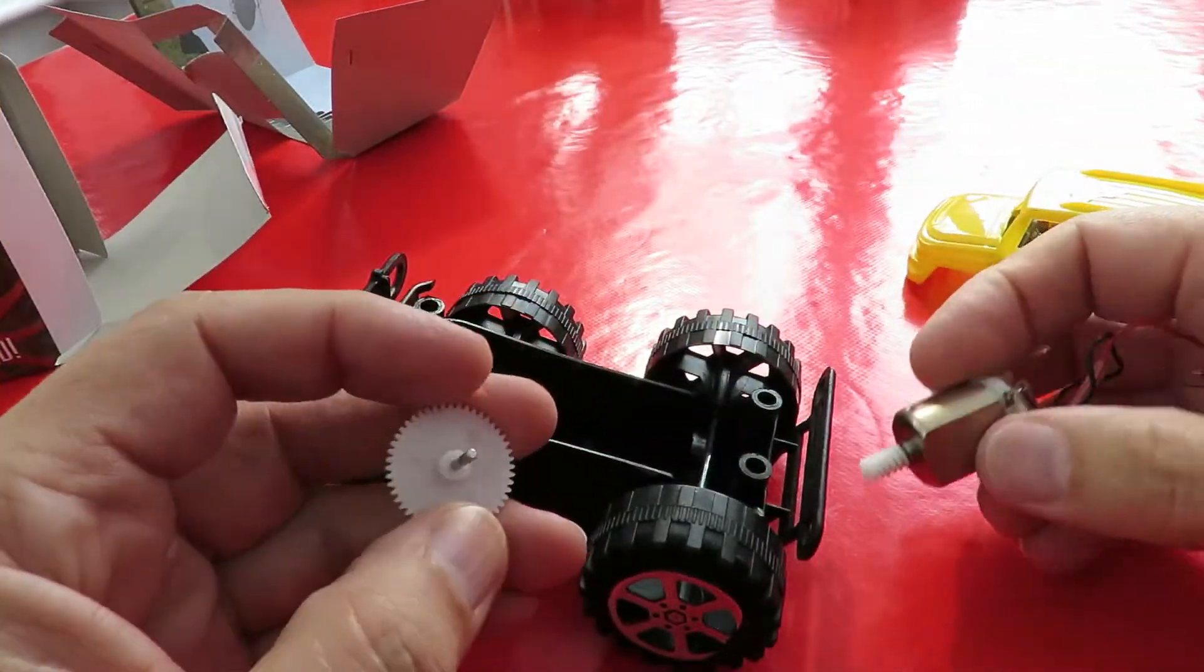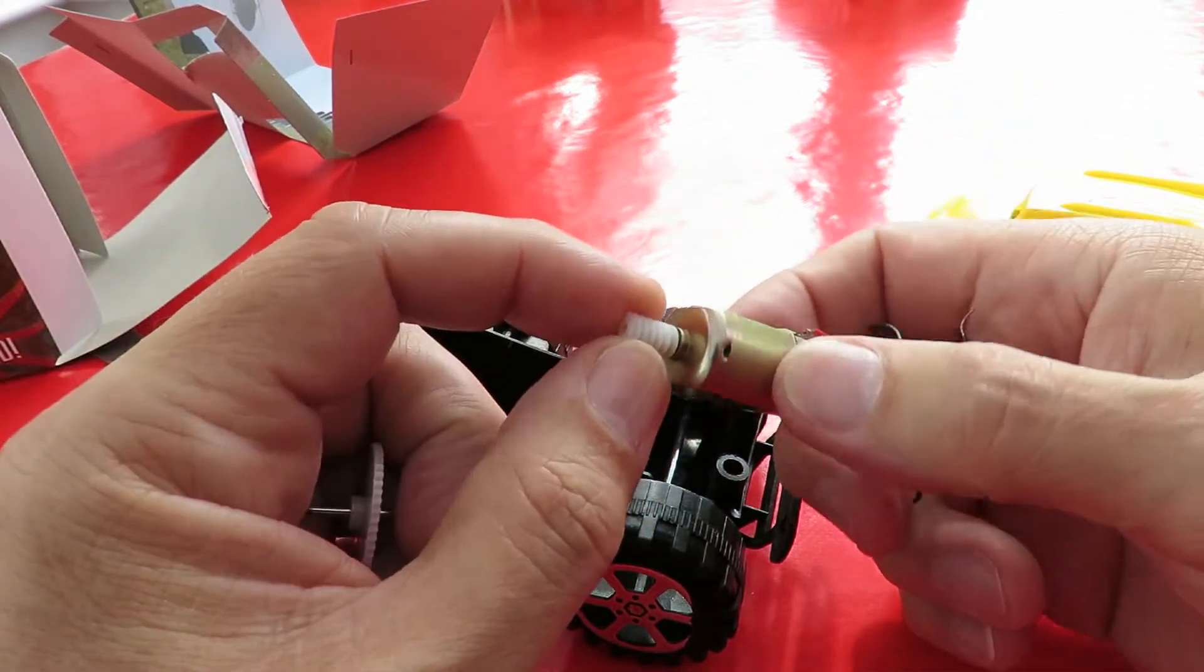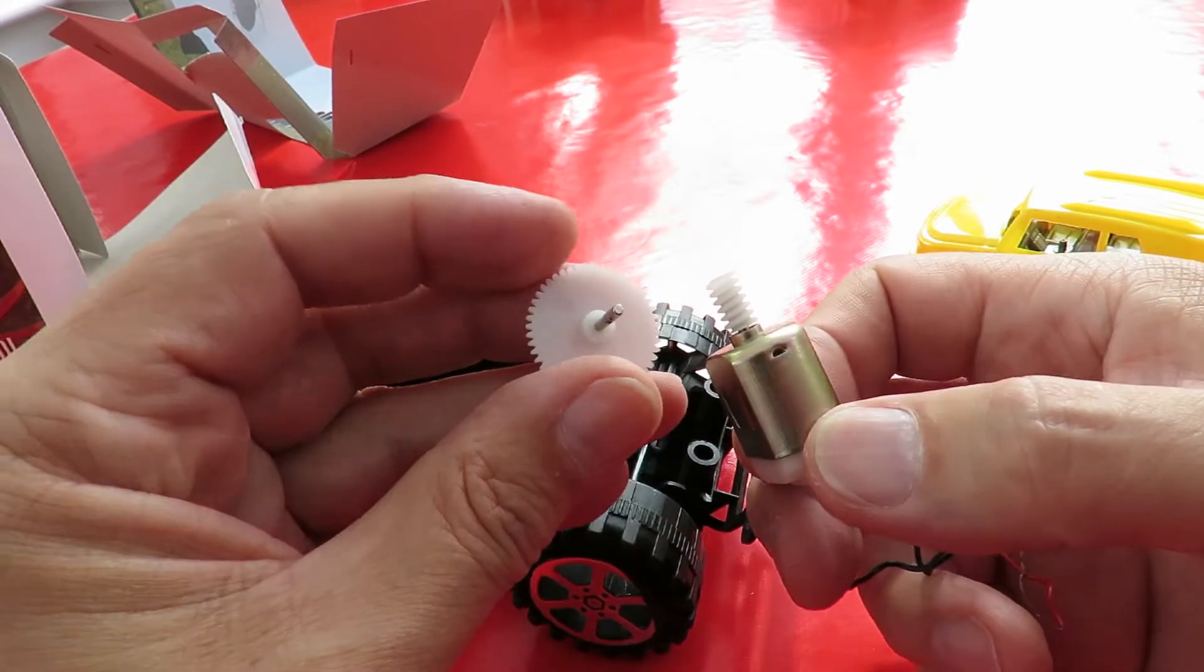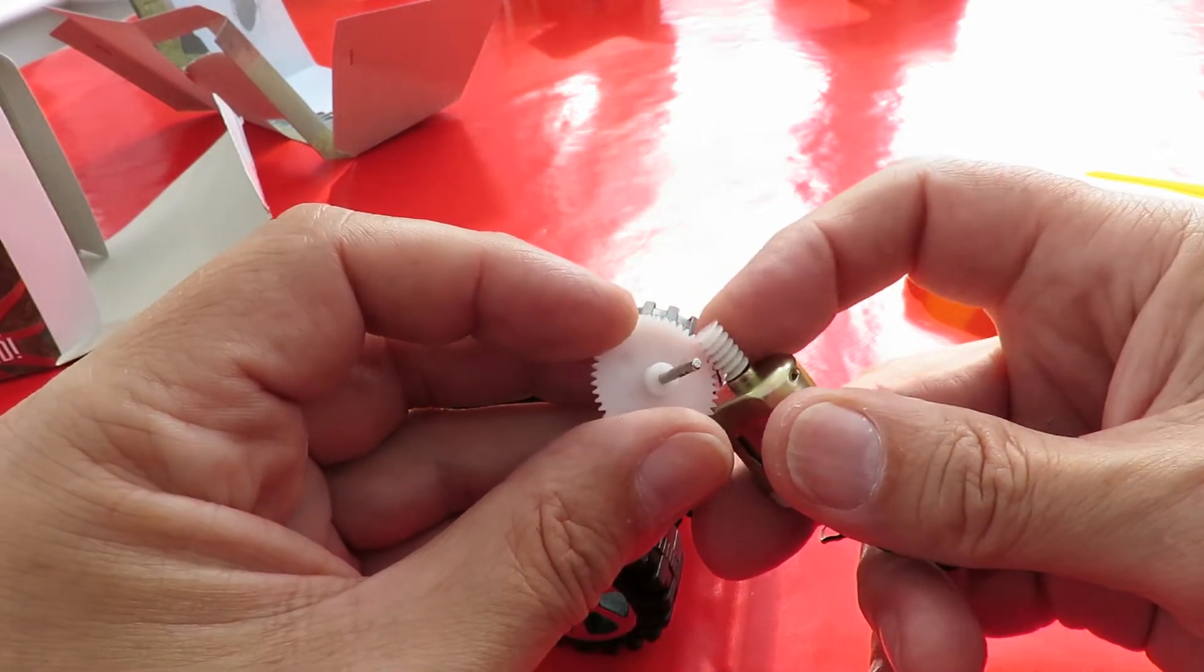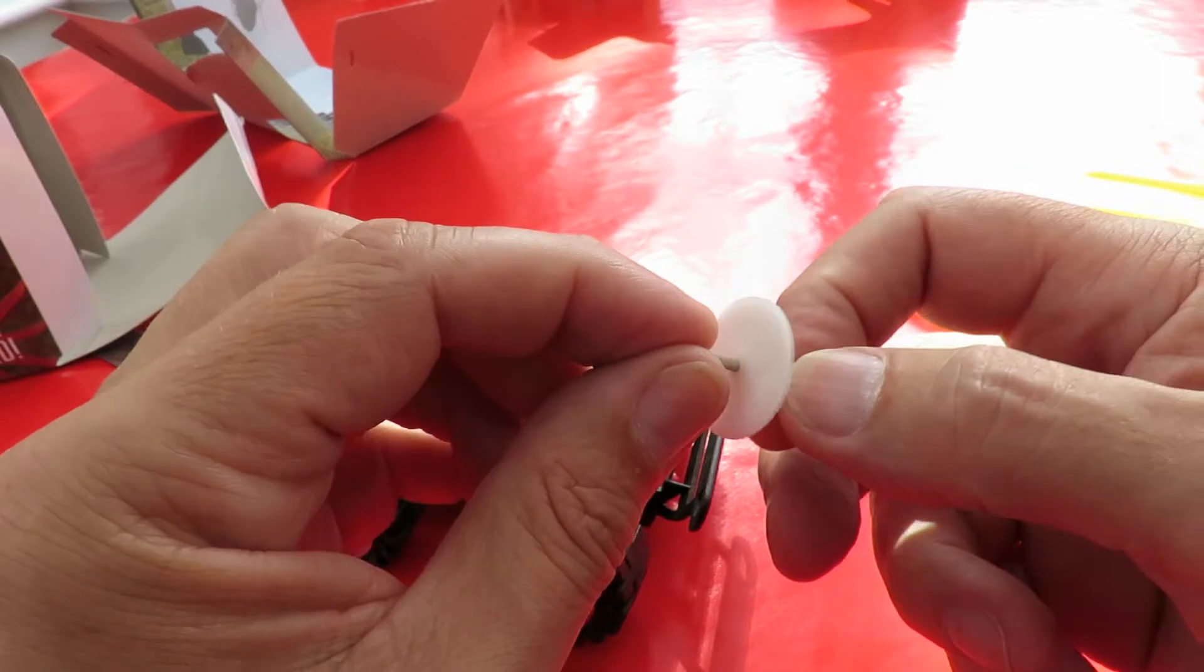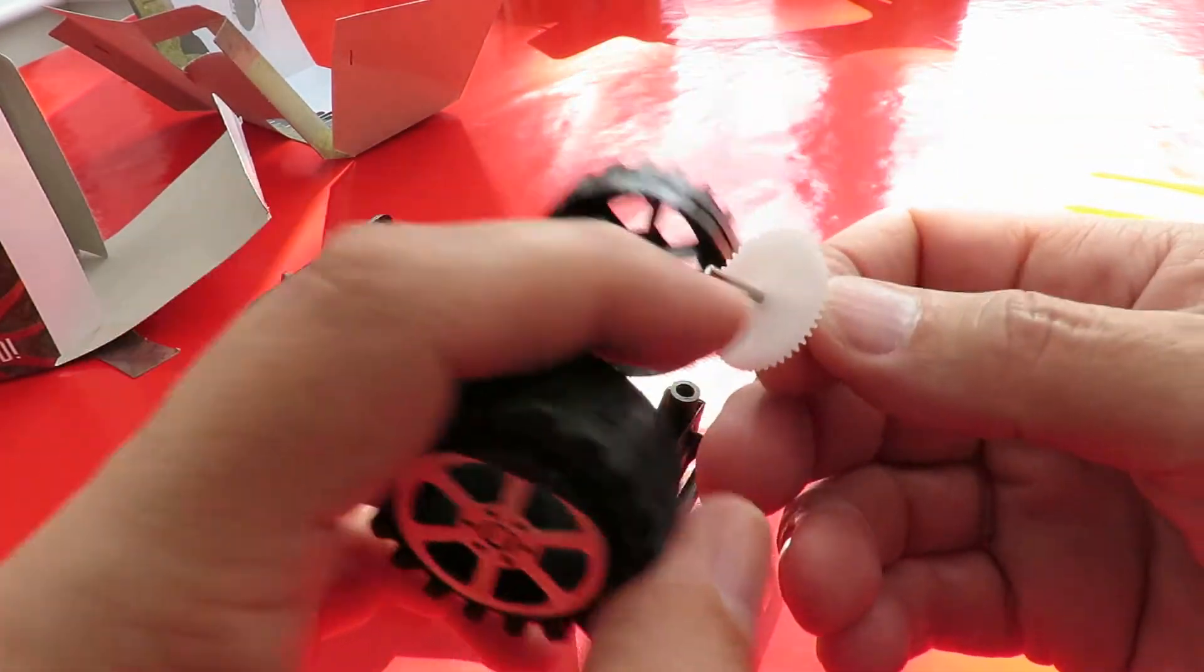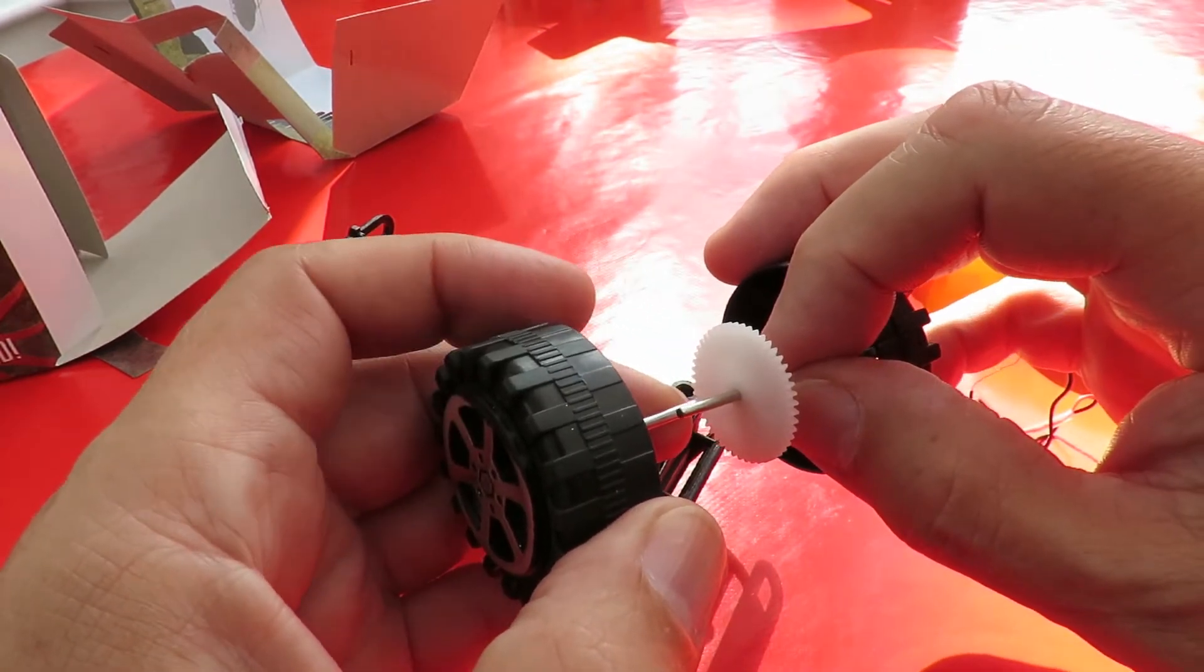Right I found in my box of bits this electric motor that's got a worm gear on it and this gear is turned by the worm gear. The shaft that's on there is quite a bit thinner than that one so I'm going to have to drill this out so we can fit that on there.